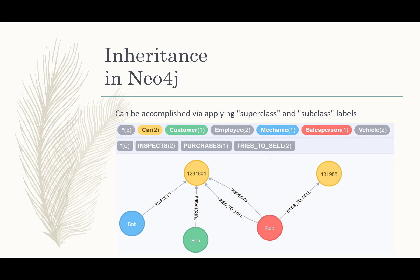The last topic is inheritance in Neo4j, and this is where Neo4j can shine nicely, unlike ternary relationships. The way you do it is by applying superclass and subclass labels. When you make nodes, you can give them a label — but in this case, we give nodes multiple labels. Notice we have two cars in yellow: they are cars, but they are also vehicles, so these nodes are tagged with both labels. We also have three Bobs: Bob the mechanic in blue, Bob the customer in green, and Bob the salesperson in red. We have three people, but only two employees — the mechanic and the salesperson — demonstrating the superclass label 'employee' with subclass labels like 'mechanic' or 'salesperson'.